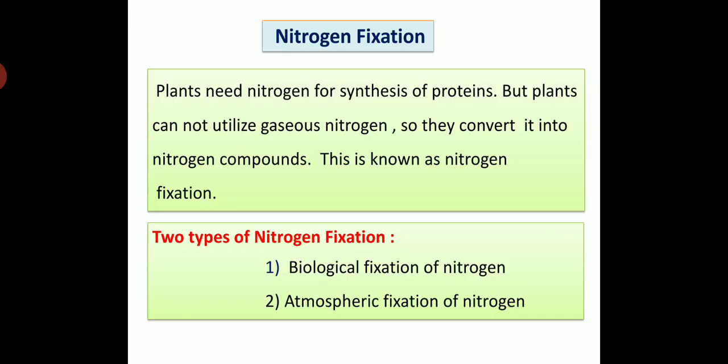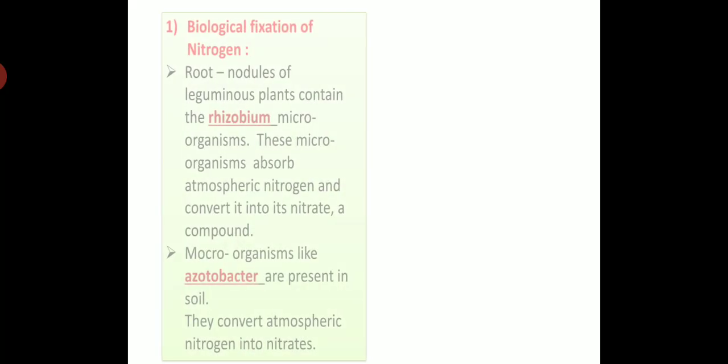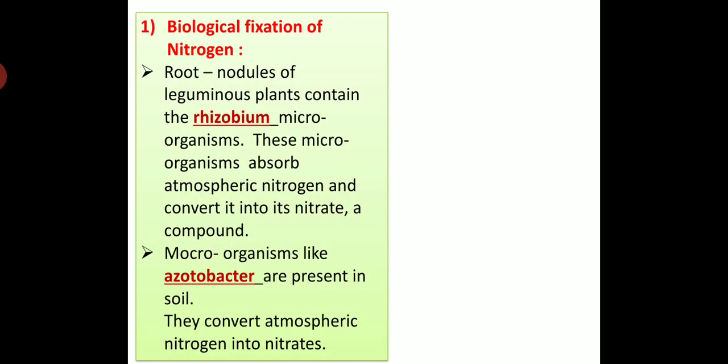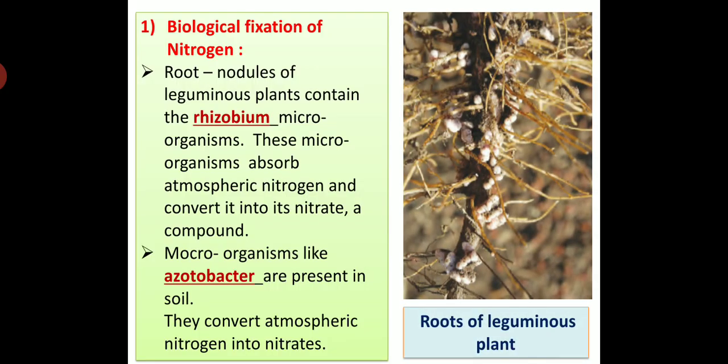There are two types of nitrogen fixation: biological fixation of nitrogen and atmospheric fixation of nitrogen. First, biological fixation of nitrogen. Root nodules of leguminous plants contain the rhizobium microorganisms. These microorganisms absorb atmospheric nitrogen and convert it into its nitrate, which is a compound of nitrogen. Observe this diagram. In this diagram you can see root nodules of leguminous plant.